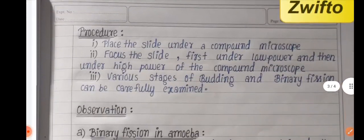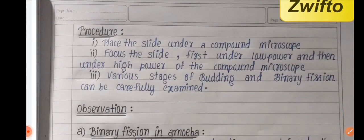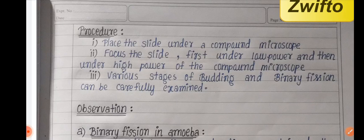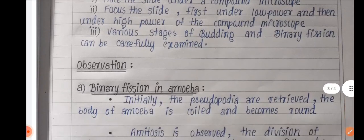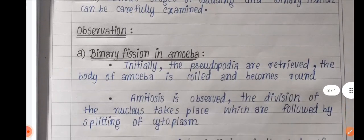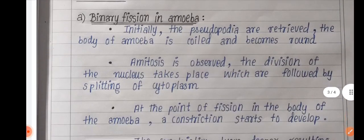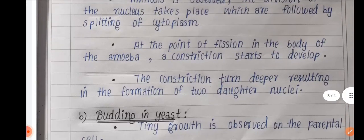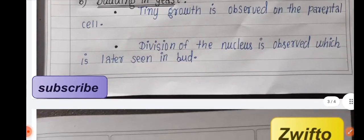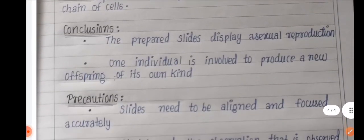For procedures, first place the slide in the compound microscope and focus it under low power. Then observe under high power. Note the observations on the right side, showing the outgrowth.